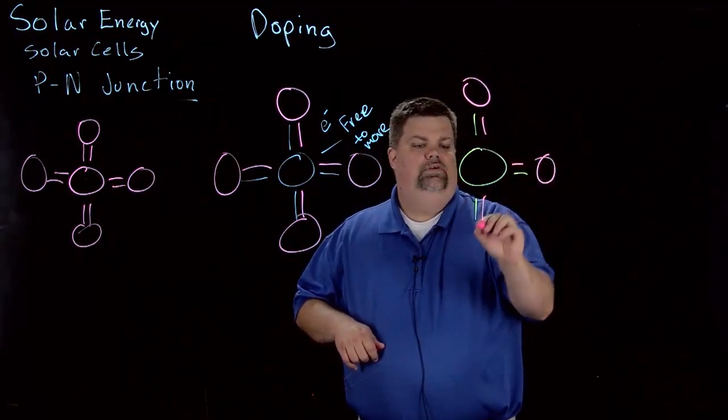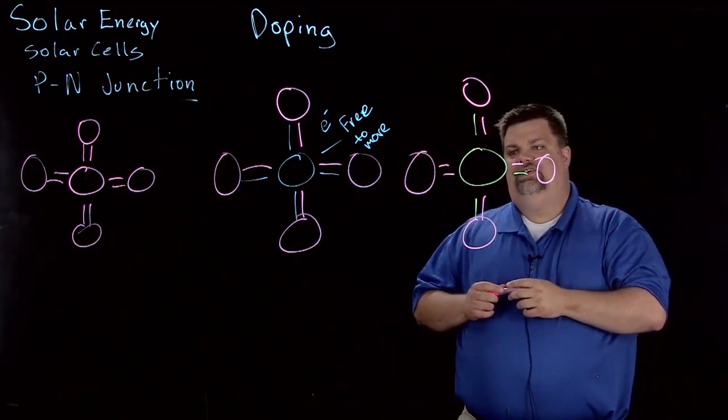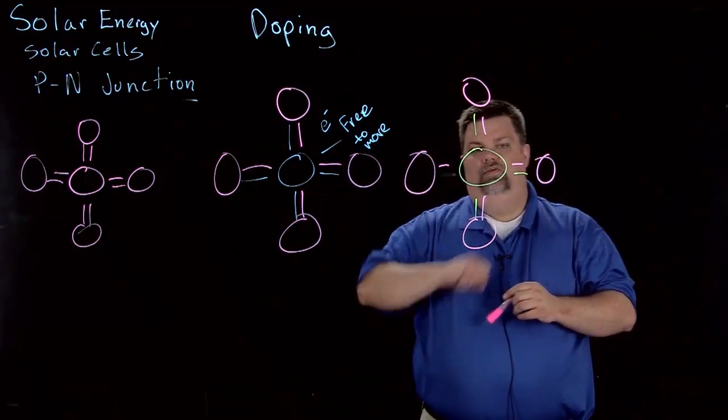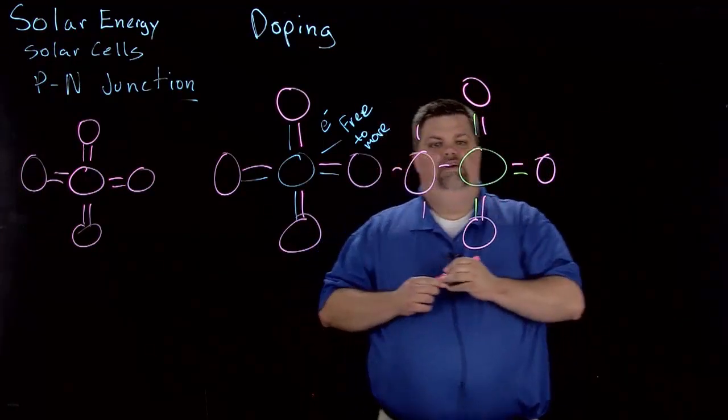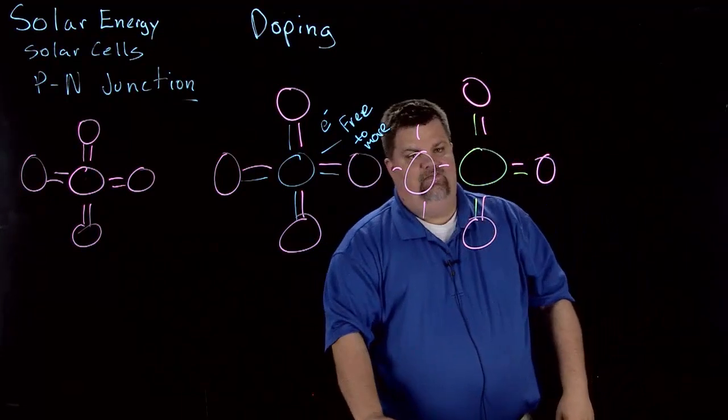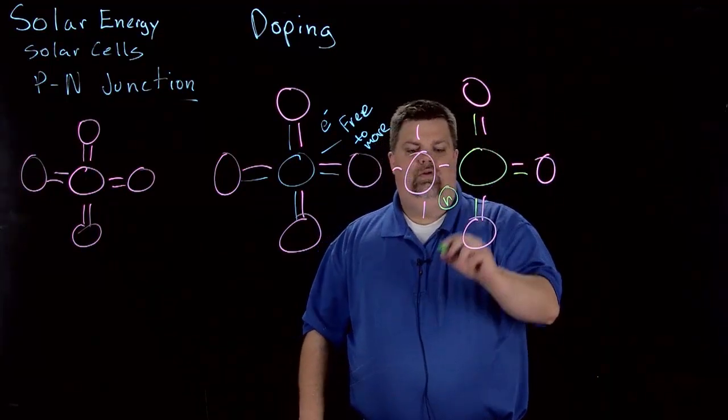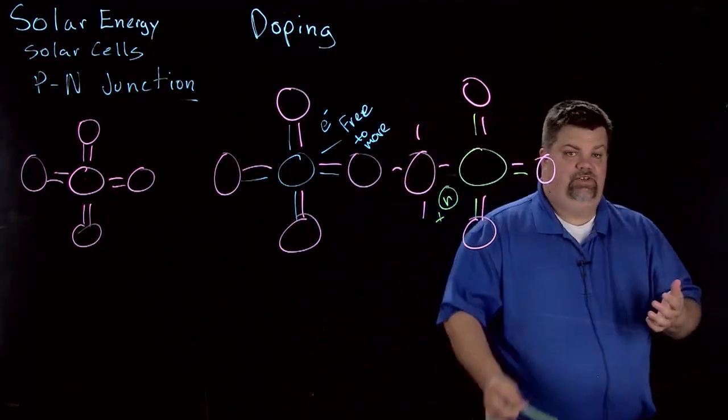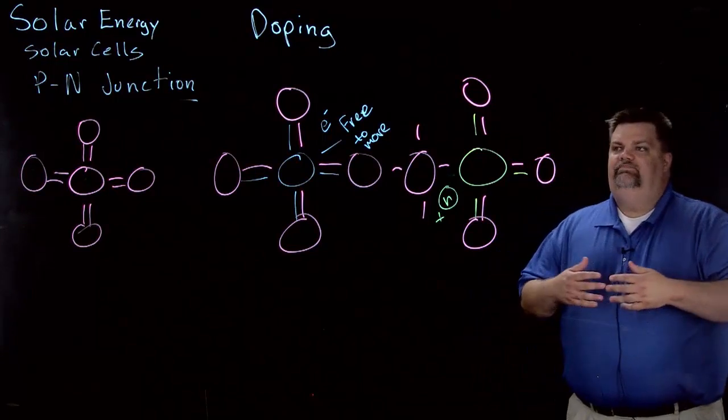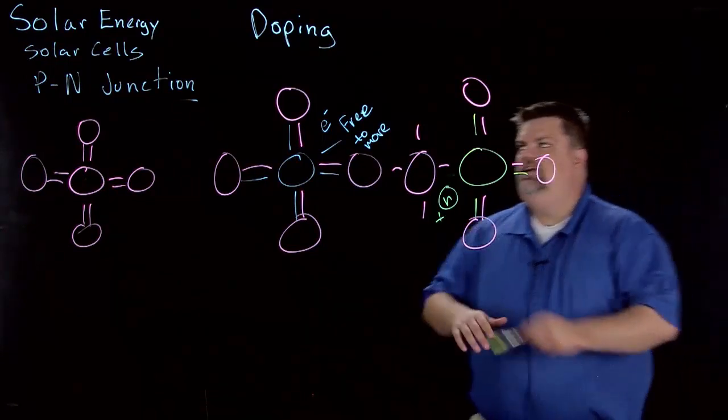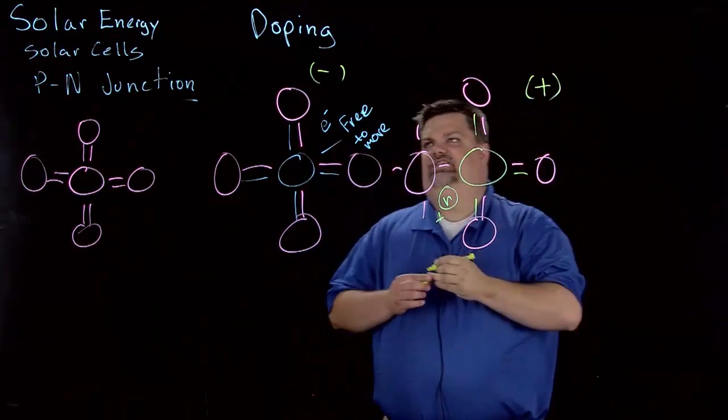When we introduce that into a structure like silicon, we actually have one of those missing. Now what we end up having is right here we have what we call a hole, which is because it's lacking an electron. If we're lacking an electron, then basically this has a positive charge. Over here what we end up with is kind of a negative charge, and over here we have a positive charge.